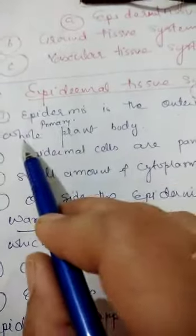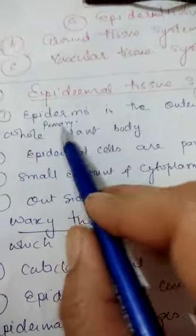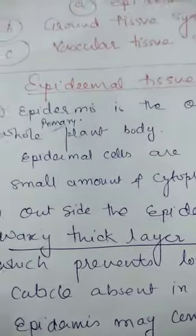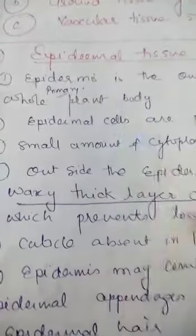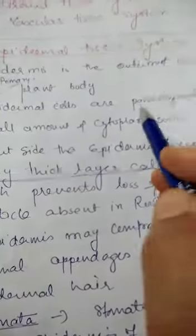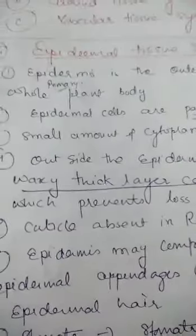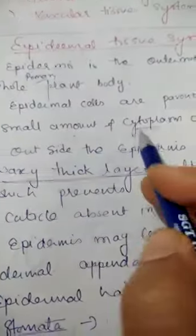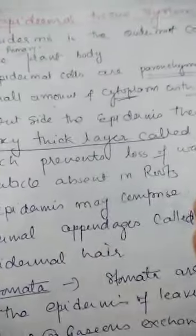As I told you, epidermis is the outermost layer which always covers the whole primary plant body. When plants become old, epidermis may get ruptured. The primary plant body is covered with epidermis made up of parenchymatous cells. These cells have small amount of cytoplasm with large vacuole, and outer side of the epidermis there may be a waxy thick layer which is called cuticle.